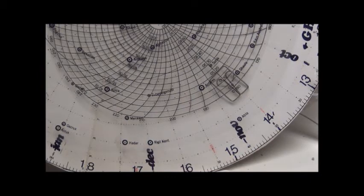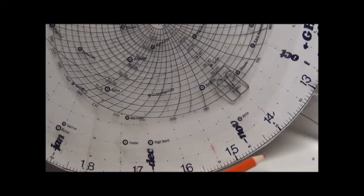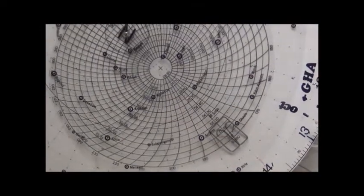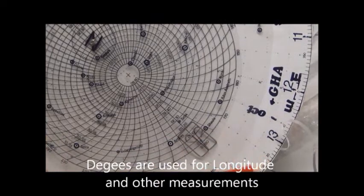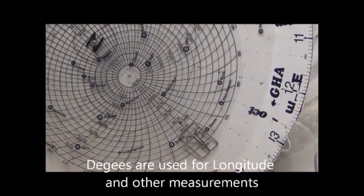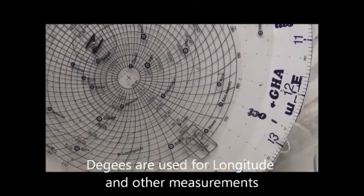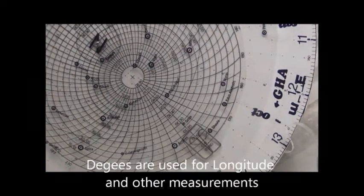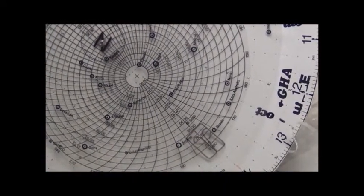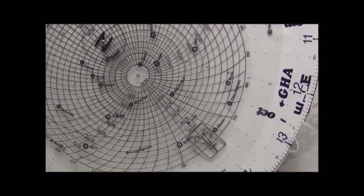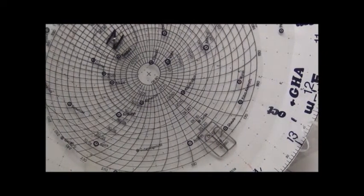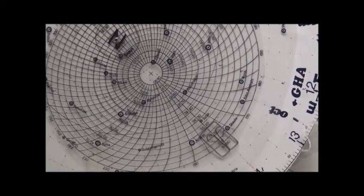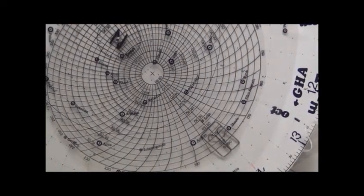November, December, January, right around. We also have, starting at 12 o'clock, 0, 10, 20, 30, 40, 360 degrees right around the outer rim. So we can do many things with this. And this will be explained to you as we set up the star finder for finding stars.